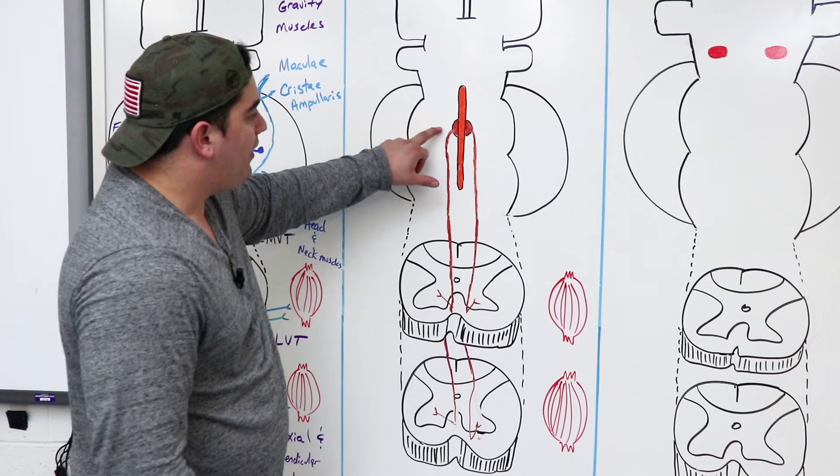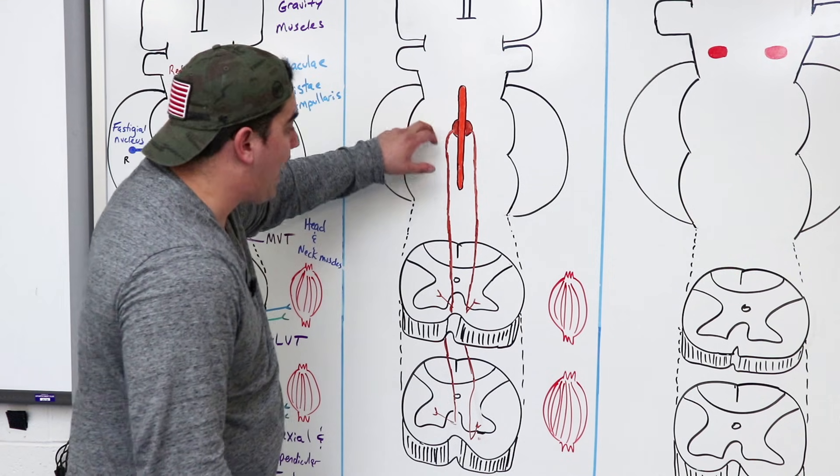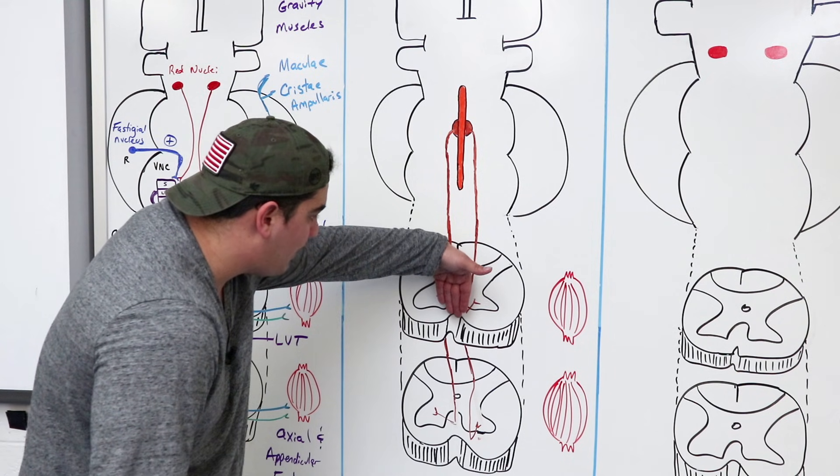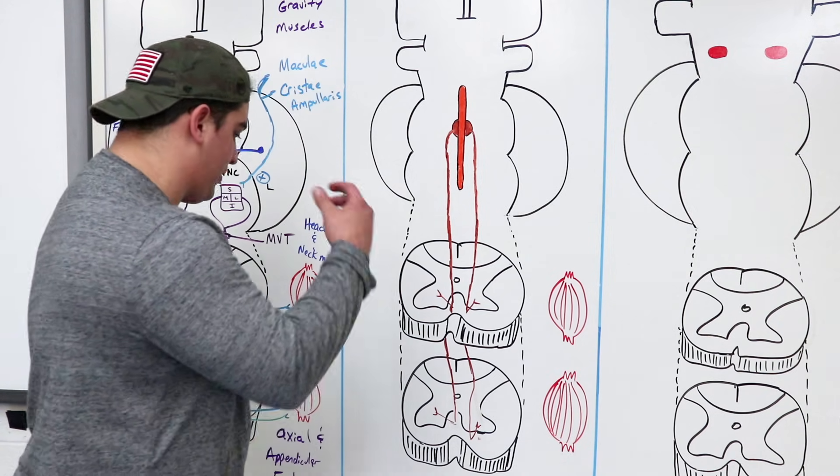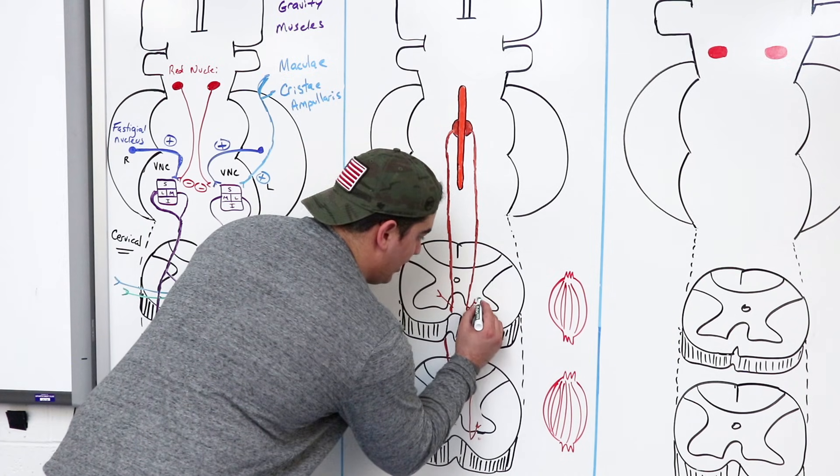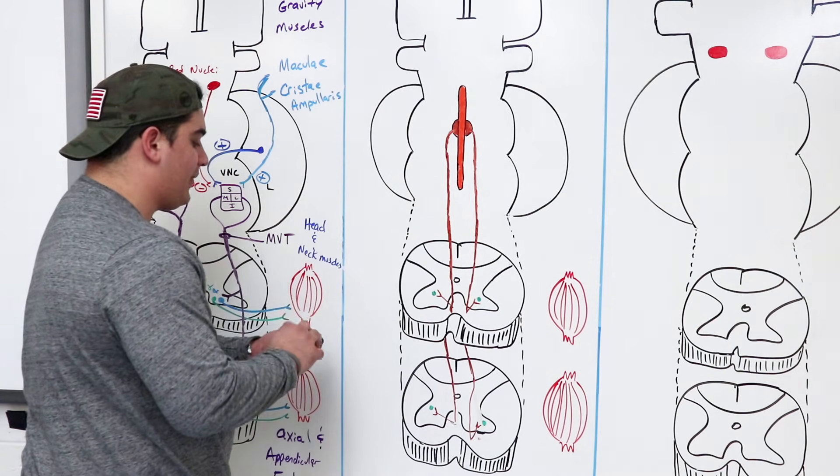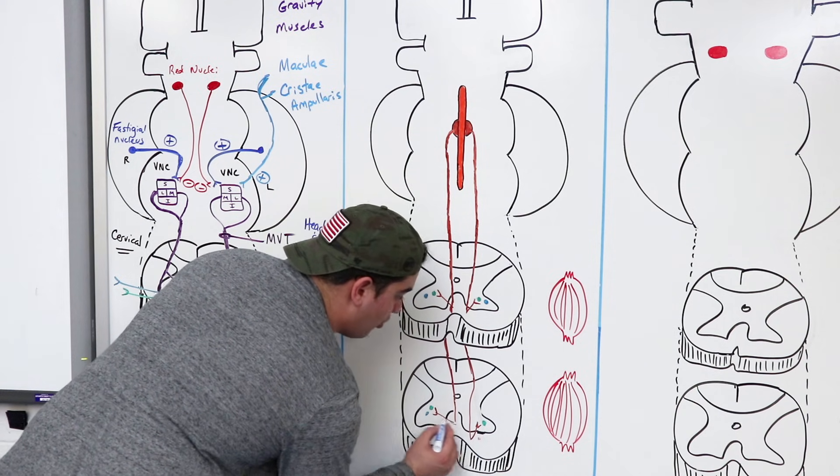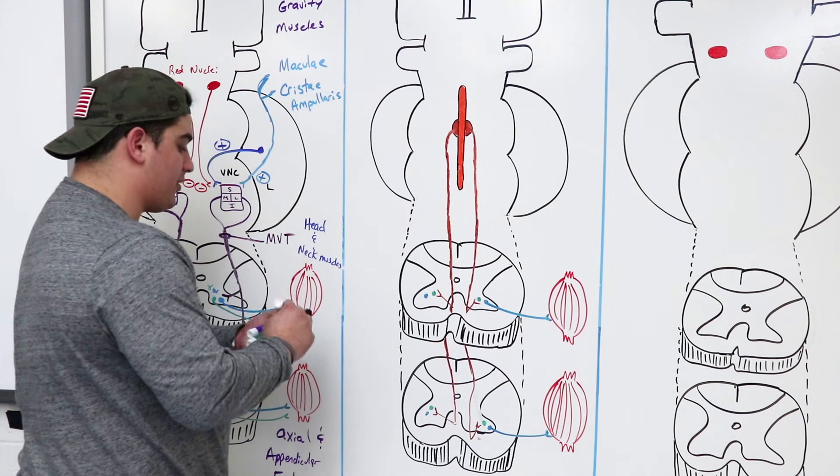Now, when these fibers, these descending pontoreticulospinal tract goes down, it descends right into the actual ventral or anterior white column. It gives off its extensions into the anterior ventral gray horn. To what? It's going to go and supply what type of structures here? Gamma motor neurons, and it's also going to supply alpha motor neurons. And these gamma and alpha motor neurons are going to go out and stimulate the different extensor muscles.